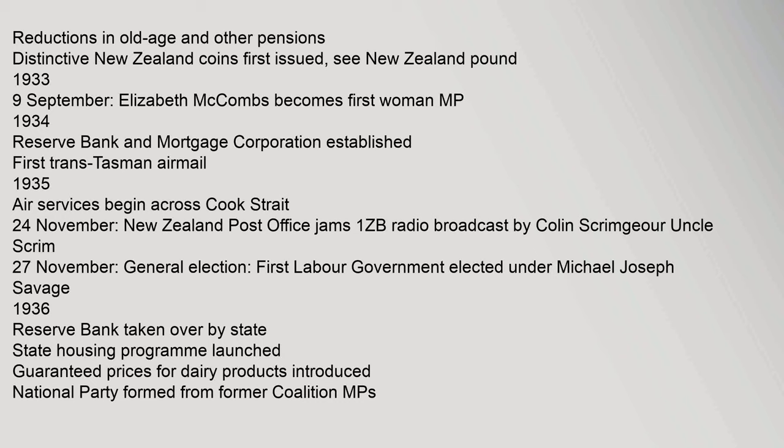Reductions in old age and other pensions. Distinctive New Zealand coins first issued. 1933, 9 September: Elizabeth McCombs becomes first woman MP. 1934: Reserve Bank and Mortgage Corporation established. First Trans-Tasman Air services begin across Cook Strait. 1935: New Zealand Post Office jams 1ZB radio broadcast by Colin Scrimgeour, 'Uncle Scrim.' 27 November: General election — first Labour government elected under Michael Joseph Savage.